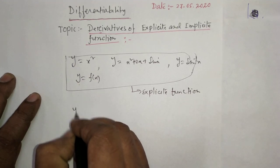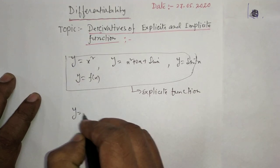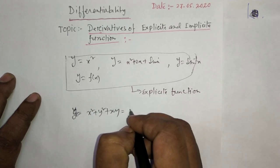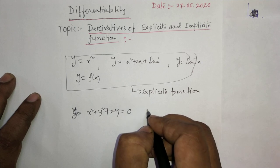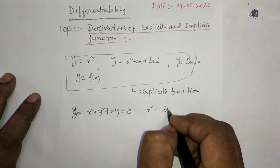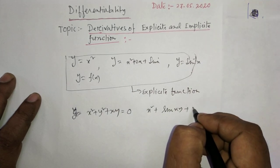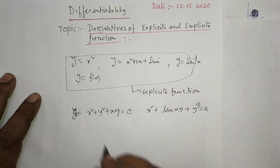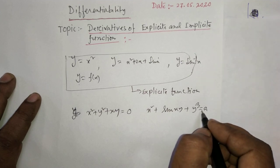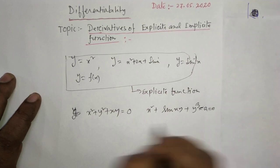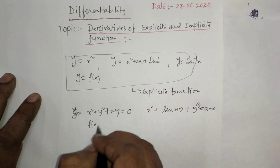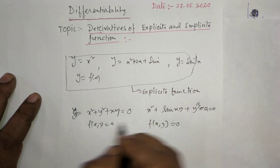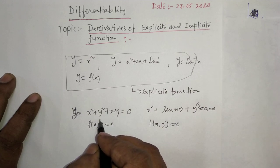Now, what is an implicit function? For example, suppose x squared plus y squared plus xy equals 0, or suppose x squared plus sin(xy) plus y equals a constant. If we bring everything to the left-hand side it becomes f(x, y) equal to 0. Here you see you cannot express y in terms of x.